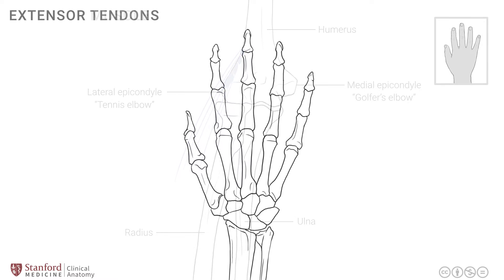Let's now look at the sites and relationships of these various extensor muscles as they become tendinous at the wrist and at the level of the hand. The first of this group of muscles is the brachioradialis, and it attaches onto the distal radius. This muscle does not cross the wrist joint and therefore has no action at the wrist joint — it has action at the elbow only.